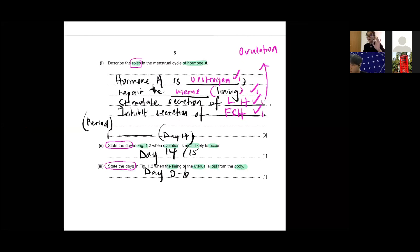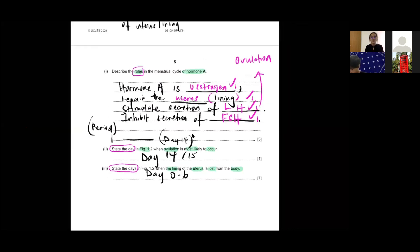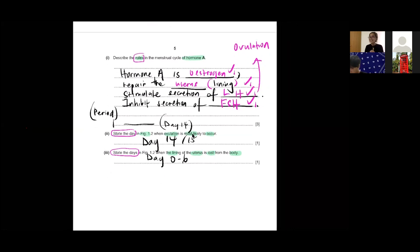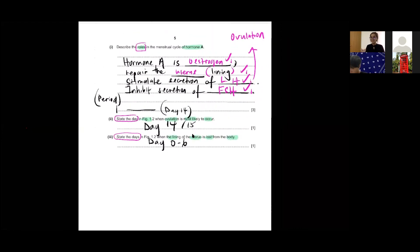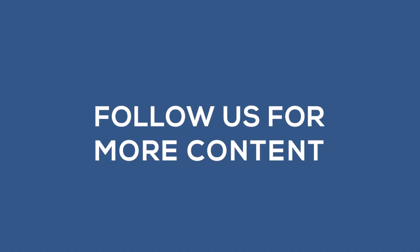So estrogen release... is estrogen and progesterone released by follicles or the ovary? Follicle is in the ovary. So if you want to be safe you can just say ovary, understand? But it is released by follicles, released by the follicle, correct.